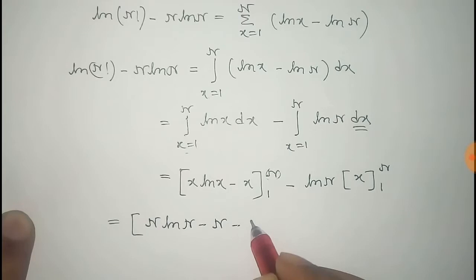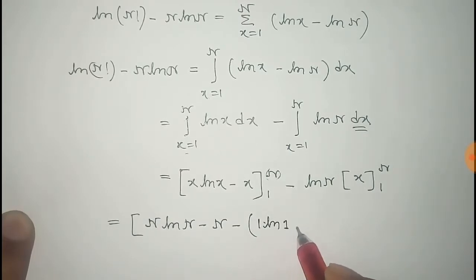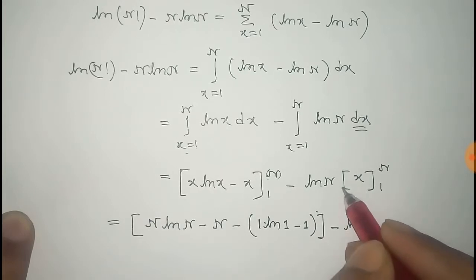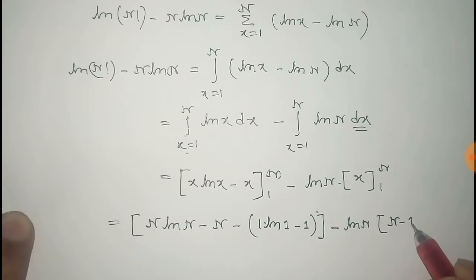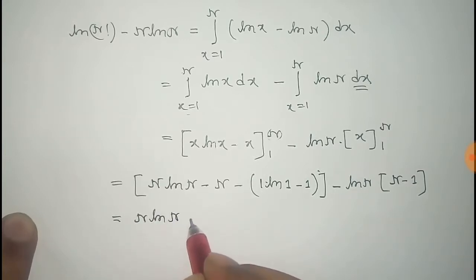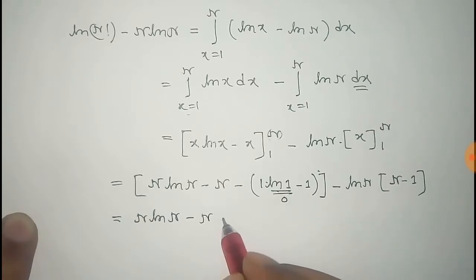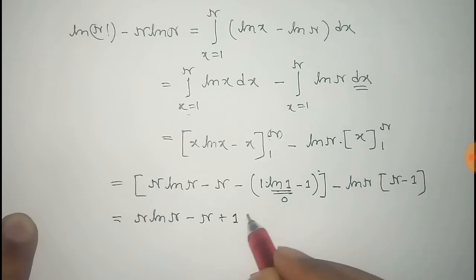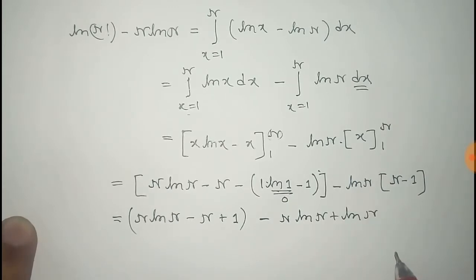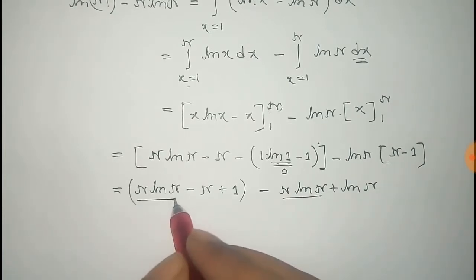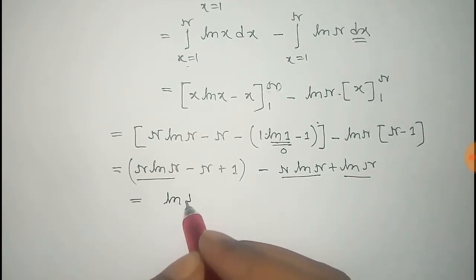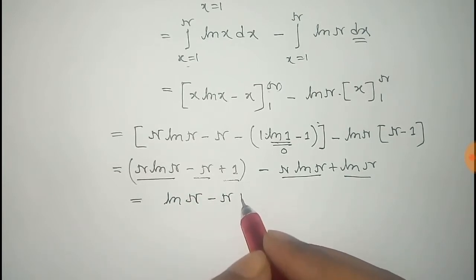Putting in the limits, we get: [n·log(n) − n] − [1·log(1) − 1] − log(n)·[n − 1]. Since log(1) = 0, that term vanishes and we get n·log(n) − n + 1 − n·log(n) + log(n). The n·log(n) terms cancel, leaving log(n) − n + 1.